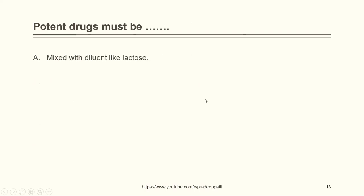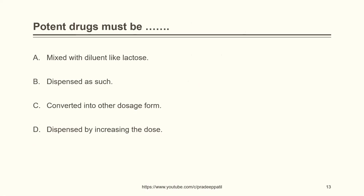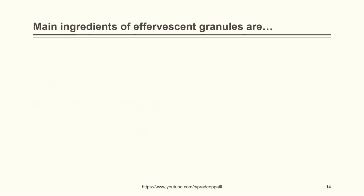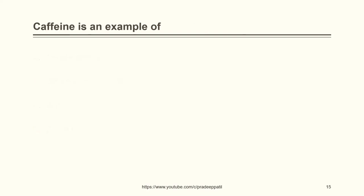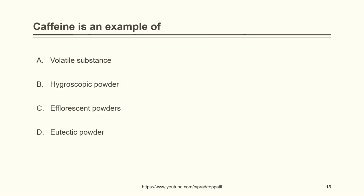Potent drugs must be mixed with diluents like: lactose, dispensed as such, converted into other dosage form, or dispensed by increasing the dose. The answer is simply — potent drugs must be mixed with diluents like lactose. Caffeine is an example of: volatile substances, hygroscopic powder, efflorescent powder, or eutectic powder. Caffeine is an example of efflorescent powder.